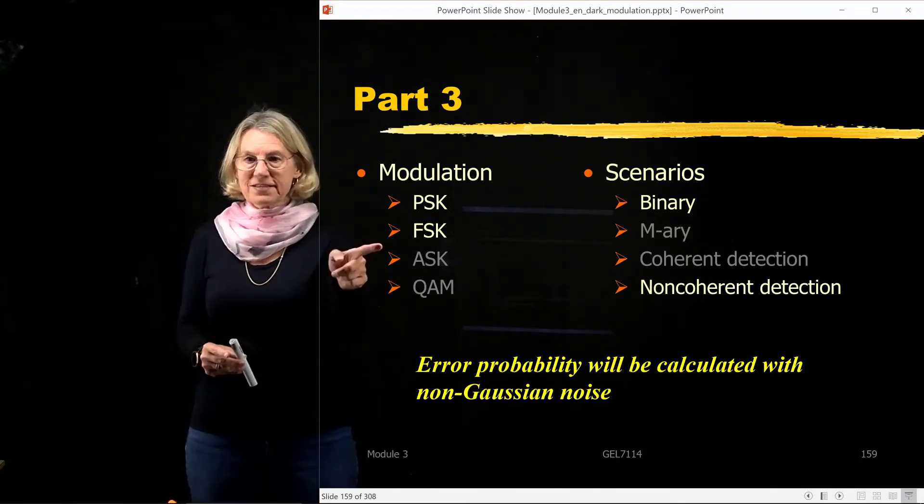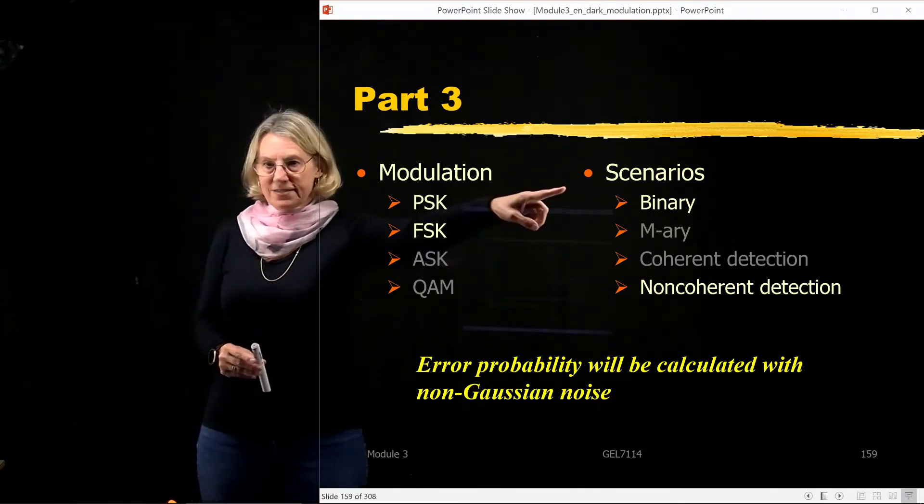So all of our previous analysis with coherent detection, the noise always has Gaussian statistics. And we exploit that in order to find our bit error rate. So we can no longer use that in the case of non-coherent detection because the noise is different. The noise no longer has a Gaussian distribution.